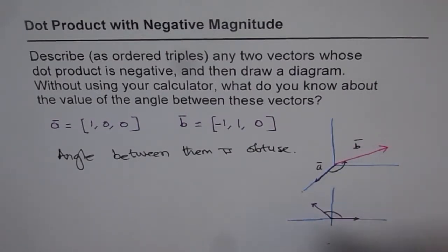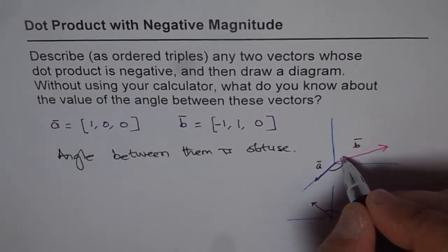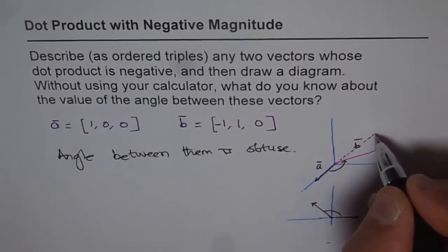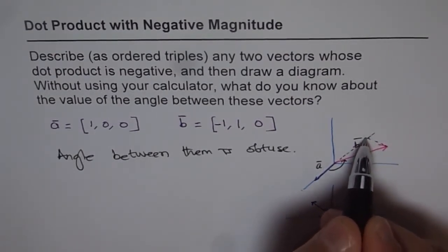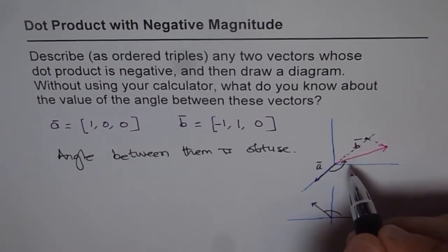Now I can actually show you the dot product here. Now if I say, what is dot product of a dot b? So it is basically the component, like this. Do you see that? So that is the value of dot product.